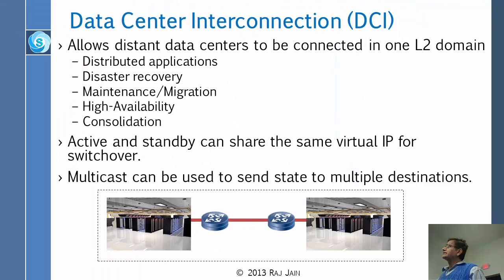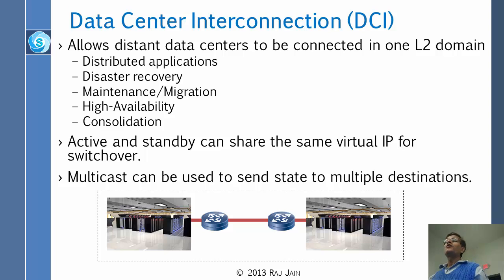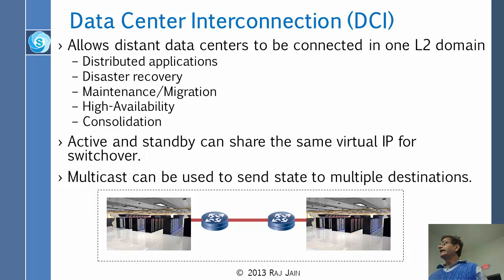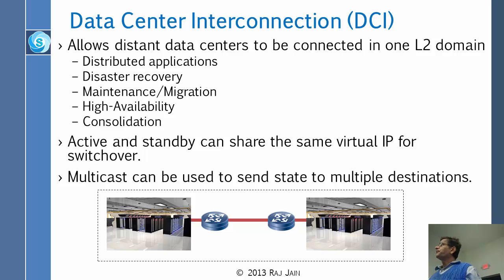The data center interconnection problem is that you have two data centers and you want to connect them. Since you want to be able to move VMs from one to the other, you want both data centers to be on one Ethernet — that means the same L2 domain. Same L2 domain means one Ethernet, so you can move anywhere. This can be used for disaster recovery, maintenance, migration, high availability, or consolidation. You need to make one Ethernet out of them so that when you move, they can use the same IP without changing it.